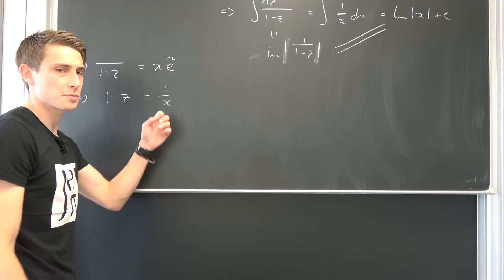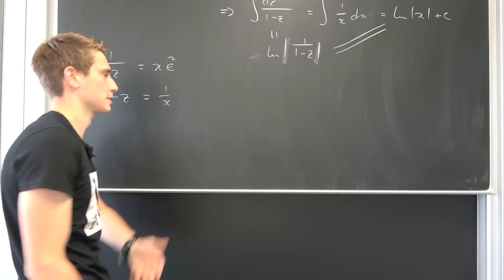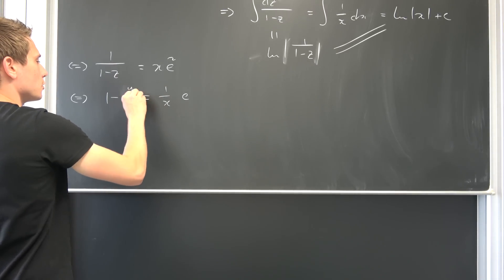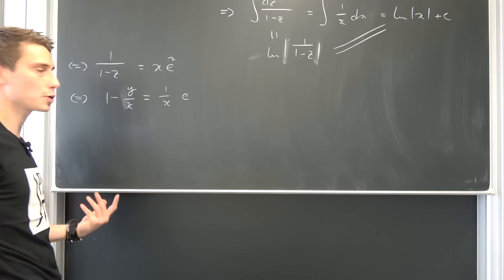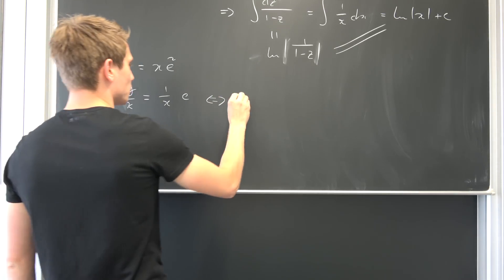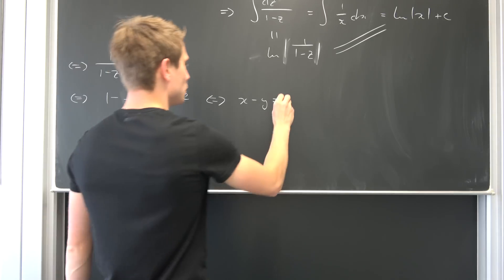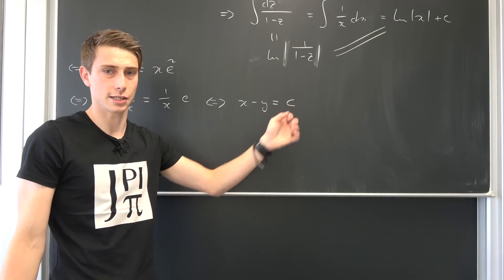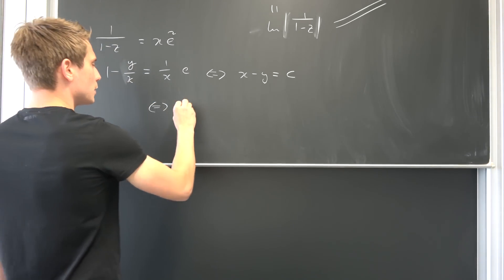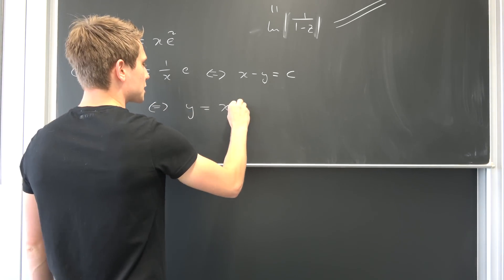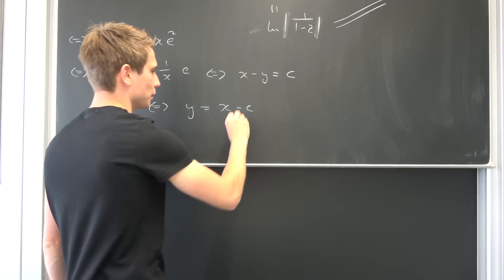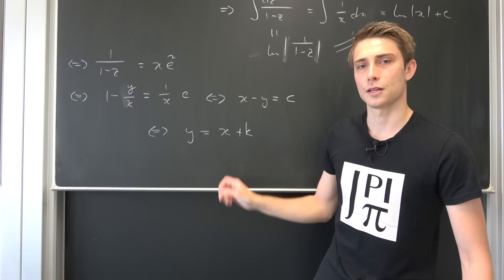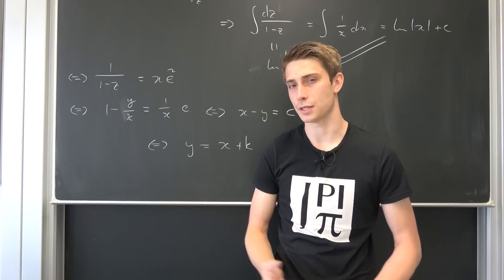Taking the reciprocal on both sides: 1 minus z equals 1/x times 1/e-tilde, which is just another constant — let's call it c. Remembering that z equals y over x, and multiplying both sides by x (with x not equal to zero), we get x minus y equals c. Adding y on both sides and subtracting c gives us y equals x minus c. Since minus c is just another constant, let's write it as y equals x plus k. And then we are done — this was an application of Euler homogeneous differential equations.